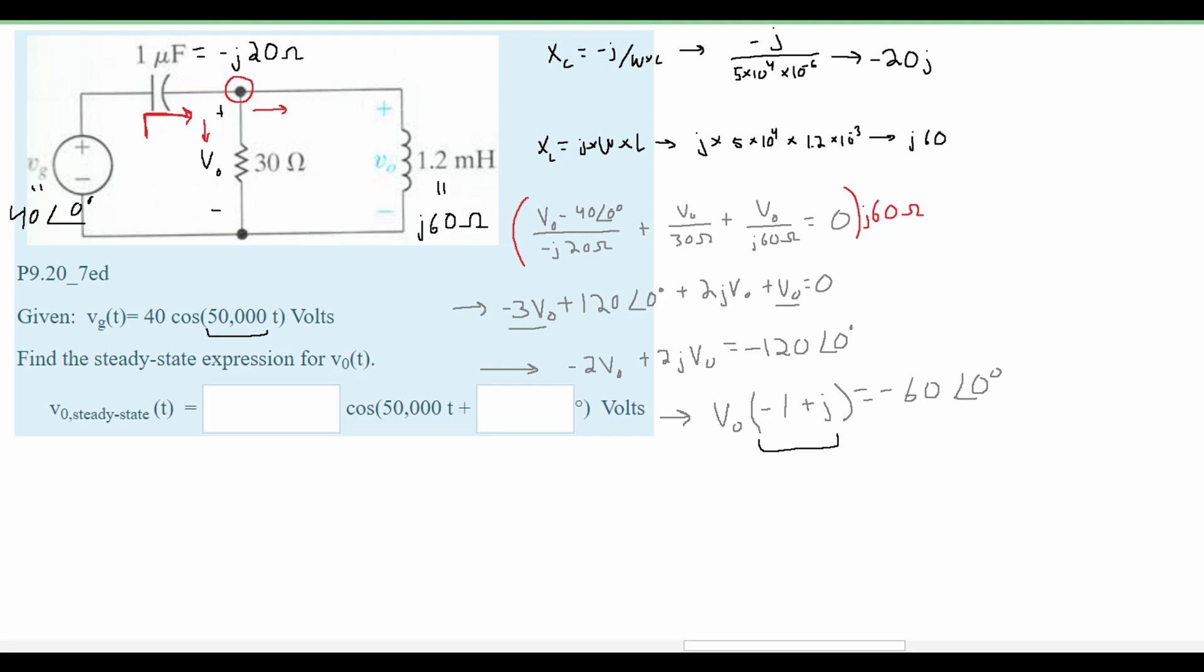So to start this off we are going to find our Vm and then we are going to find our theta. We know that our Vm is the square root of our real number negative 1 squared plus the square root of our imaginary number so 1. If we do this we are going to get the square root of 2 for our Vm.